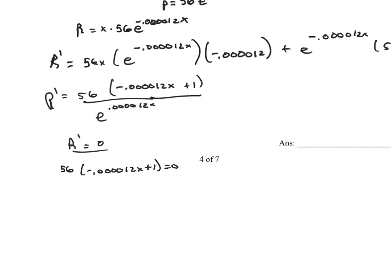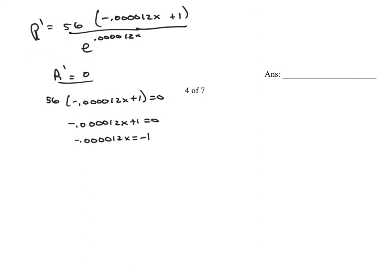Dividing both sides by 56, I'd have negative 0.00012x plus 1 equals 0. Subtracting 1 from both sides gives negative 0.00012x equals negative 1. Dividing both sides by negative 0.00012, and using my calculator — negative 1 divided by negative 0.00012 — I'm getting x equals 83,333.33, always repeating.